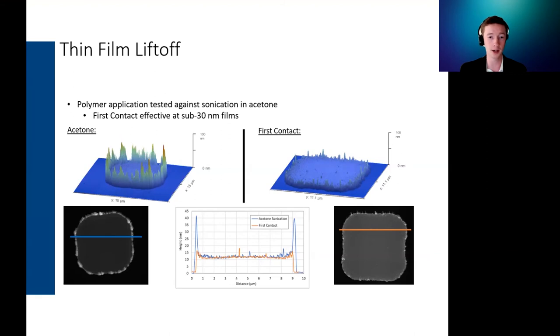However, we did find that for chromium films that were thicker than 30 nanometers, First Contact began to become less reliable. We often got pieces of the deposited film to sink below the photoresist and actually deposit onto the sample where they're not supposed to be. But it still works well for thinner films essentially. Next slide please.